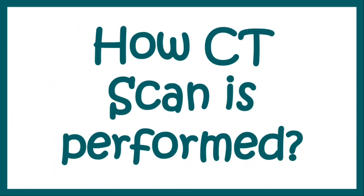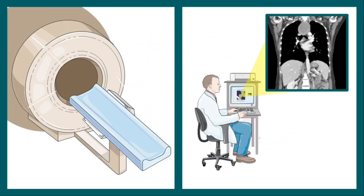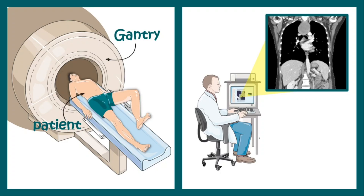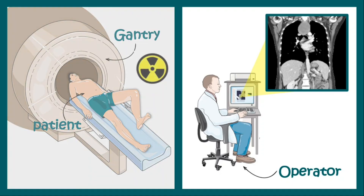How do we perform a CT scan? The CT scan machine, or the gantry, is placed in a separate room. The patient is made to lie on a stretcher near the gantry, then the patient is inserted within the gantry, and the operator sits in a separate room where the generated image can be seen on a computer. The gantry and the patient are kept in a radiation-proof room where the glass and the walls are made of lead, which protects the operator from radiation.